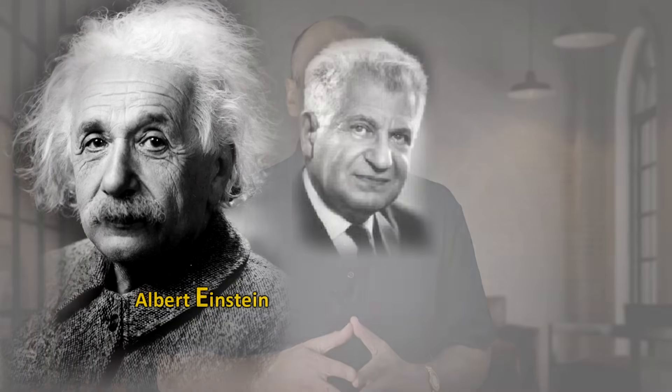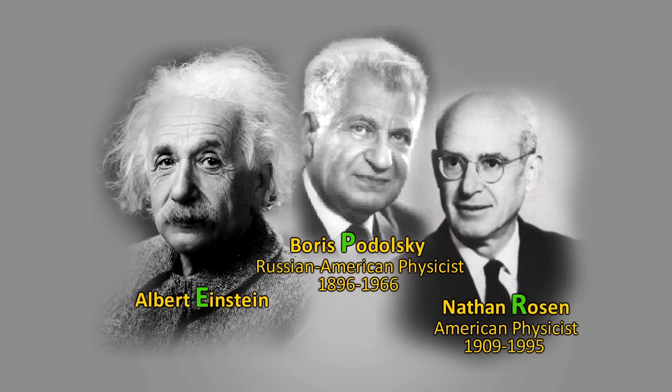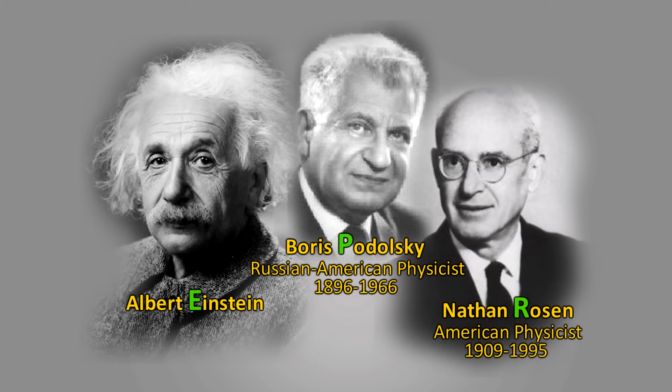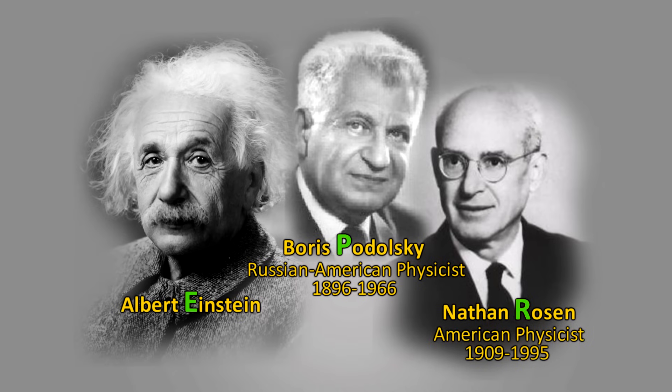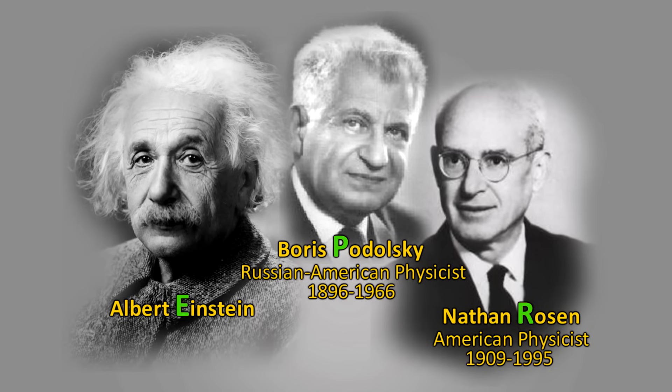So Einstein, along with two other scientists Boris Podolsky and Nathan Rosen, EPR for short, came up with what they thought disproved the Copenhagen interpretation. The crux of their argument rested on the idea of a phenomenon predicted in quantum mechanics called entanglement.